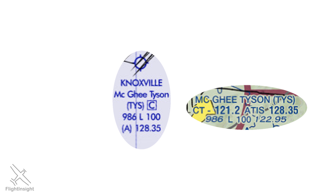Let's have a look at the basics of instrument charts, and in the next several videos we'll dive deeper into everything these charts are telling us. Let's start by looking at airports. Here's the Knoxville airport as depicted on the low en route chart.